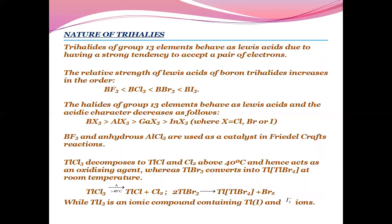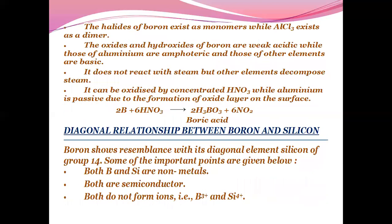Thallium bromide converts into a complex at room temperature, while thallium iodide is an ionic compound containing thallium(I) and iodide ions. The halides of boron exist as monomers while aluminium exists as dimers. The oxides and hydroxides of boron are weakly acidic while those of aluminium are amphoteric and those of other elements are basic. Boron does not react with steam but other elements decompose steam.